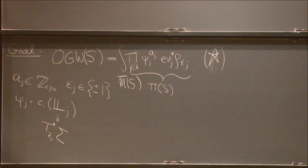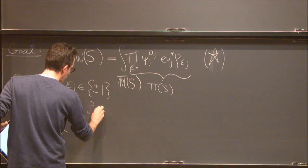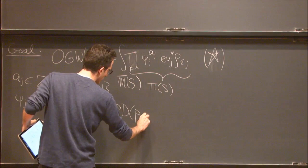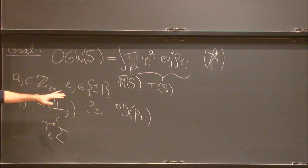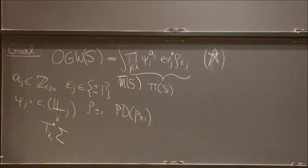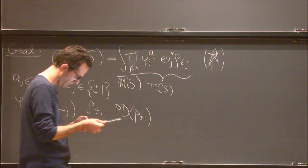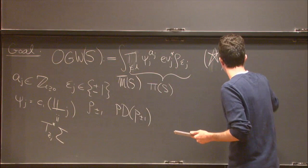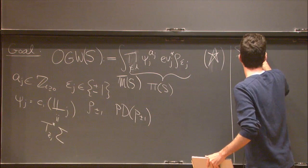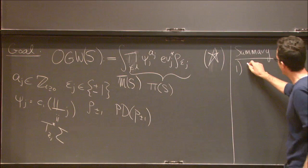I'm thinking equivariantly, but for now you can just think about the classical limit. This is still not quite well defined. Let me say where things stand now. We say that S is rational if all the connected components are either disks or spheres.